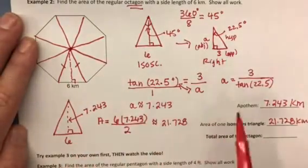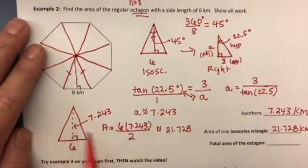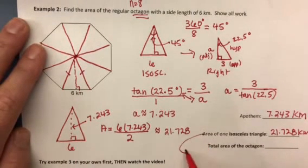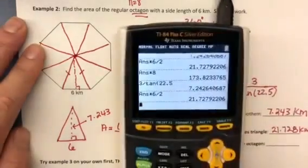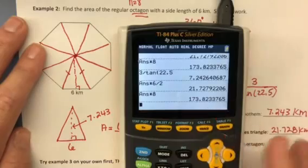All right. So then because it's an octagon and there are eight triangles, we're going to multiply the area of one triangle by eight. So that times eight will give us this total area. So that's easy. 173.823.